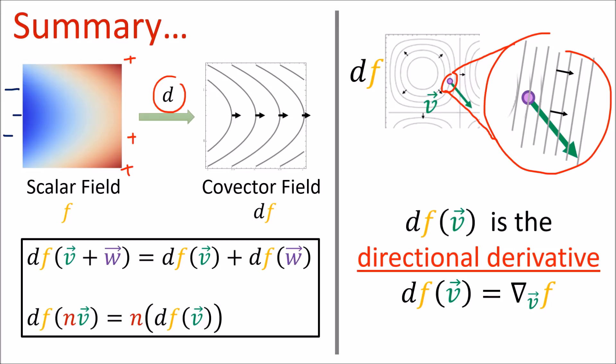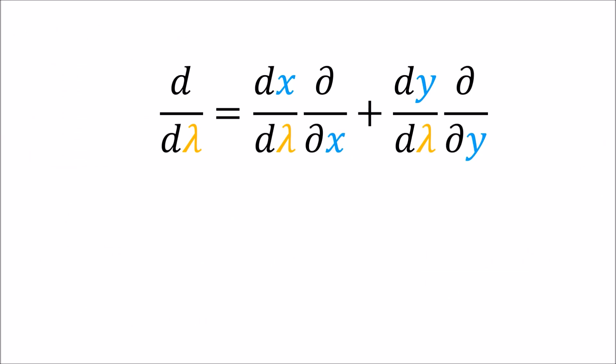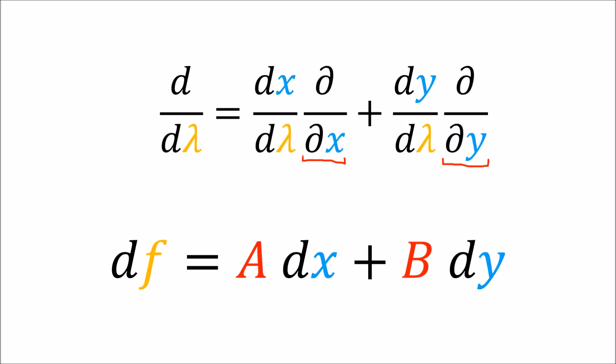In this video I want to show that just as we can write vectors as linear combinations of special basis vectors scaled by some components, we can also write differential forms as linear combinations of special basis differential forms which are also scaled by some components, and we'll figure out what these a and b components are in this video.